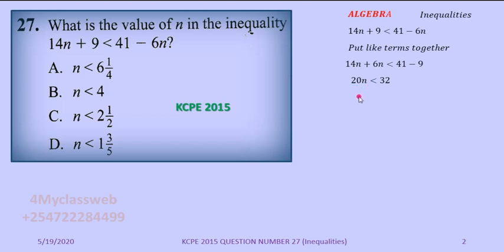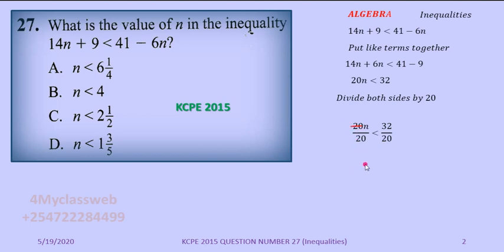My aim is to get the values of n that make this expression true. I have 20n < 32, so I need to isolate n by dividing both sides by 20. On the left, 20n ÷ 20 leaves n. On the right, 32 ÷ 20 simplifies — dividing numerator and denominator by 4 — to give 8/5.